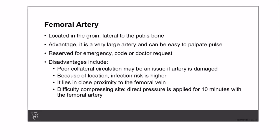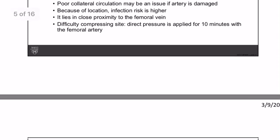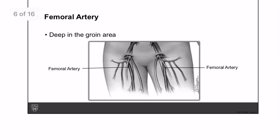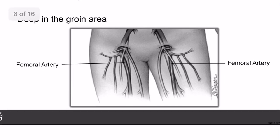The third option is the femoral artery, located in the groin lateral to the pubic bone. It is a very large artery and easily palpable, reserved for emergency or doctor request. Its disadvantages include poor collateral circulation, higher infection risk due to its location, close proximity to the femoral vein, and it is a very difficult compression site — so direct pressure must be applied for 10 minutes.